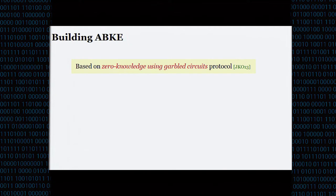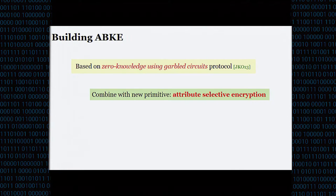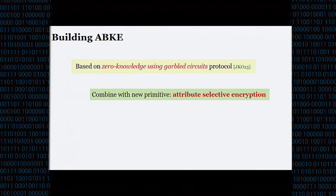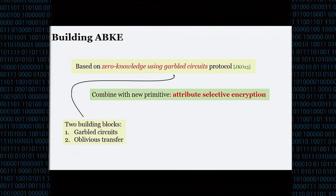So how do we build attribute-based key exchange? We'll base our construction on a protocol by Jaurek, Kirschbaum, and Orlandi from CCS 2013 that achieves zero-knowledge using garbled circuits. We will combine that with a new primitive we introduce called attribute-selective encryption. To do so, I have to discuss two building blocks: garbled circuits and oblivious transfer.